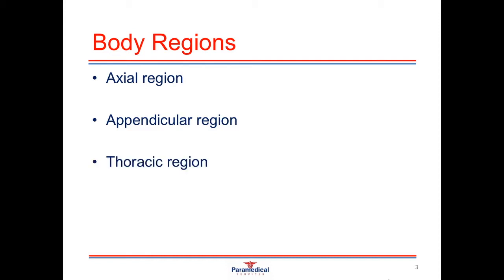Going into a smaller region, we can talk about the thoracic region, which consists of the chest, anterior and posterior, and the abdominal region, which is below the chest but above the legs.